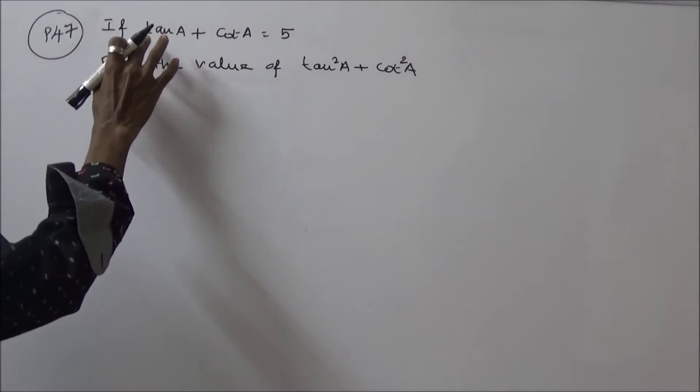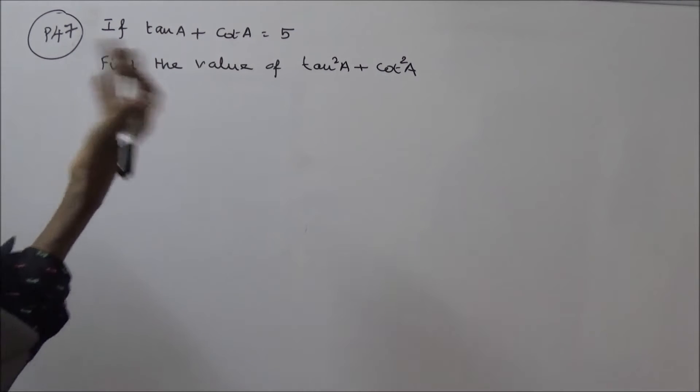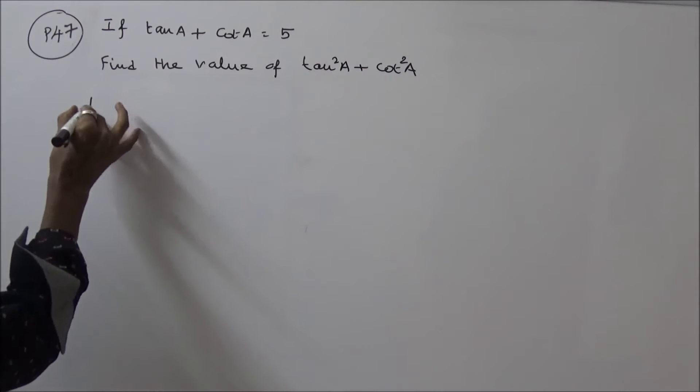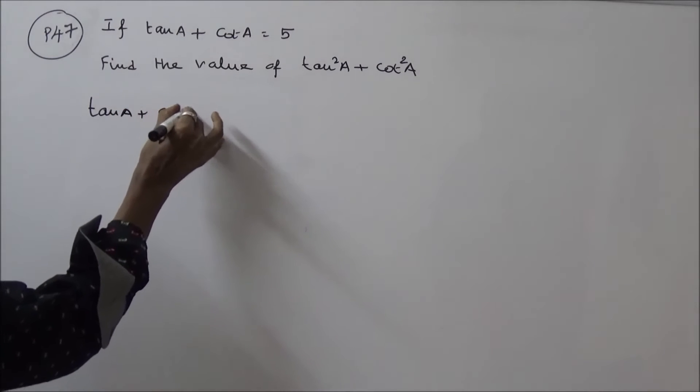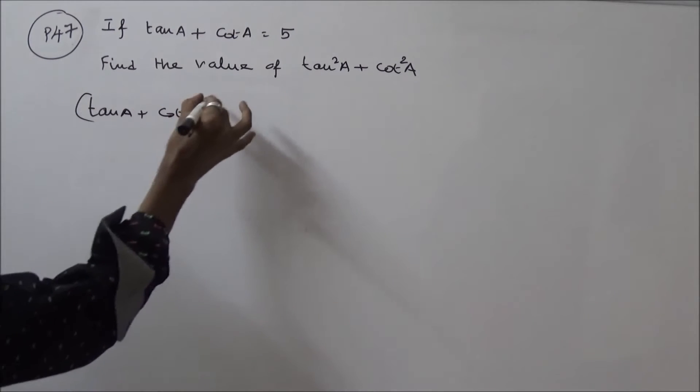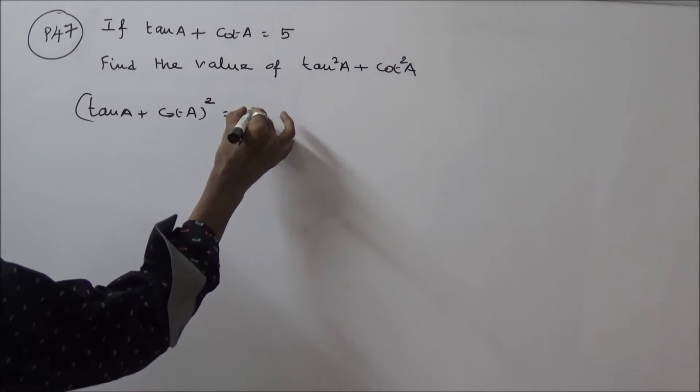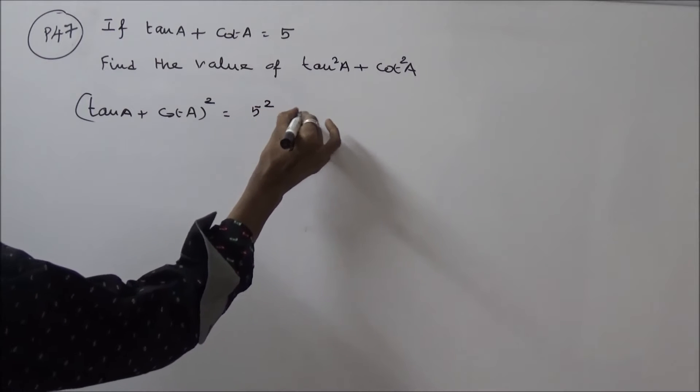I will square both left hand side and right hand side. This is tan A plus cot A, the whole square, is equal to 5 squared and is equal to 25.